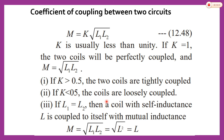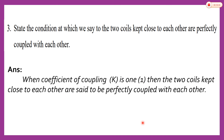When the two coils have inductances L1 and L2, then twice the mutual inductance equals the inductance of the individual coils. The condition at which two coils kept close to each other are perfectly coupled is when the coefficient of coupling k equals 1.